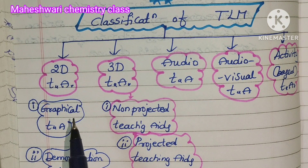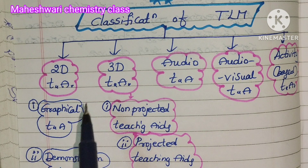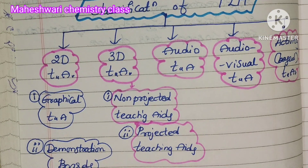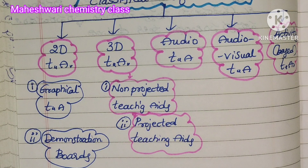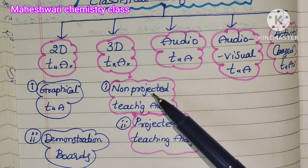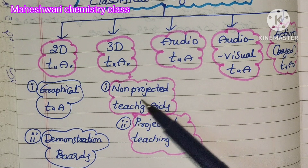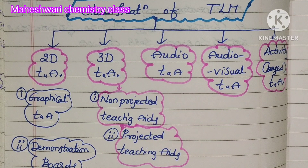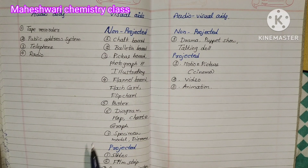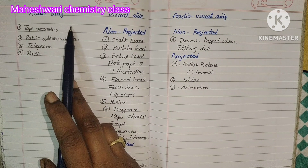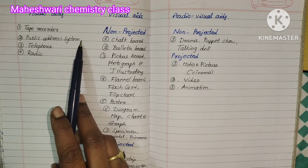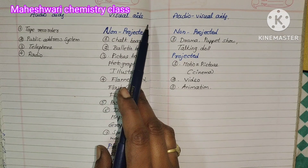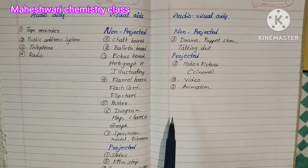2D means two-dimensional, which includes graphical teaching aids and demonstration boards. 3D means three-dimensional, which includes non-projected and projected teaching aids. In audio classification, we have tape recorder, public address system, telephone, and radio. In visual learning, there are two types: non-projected and projected.